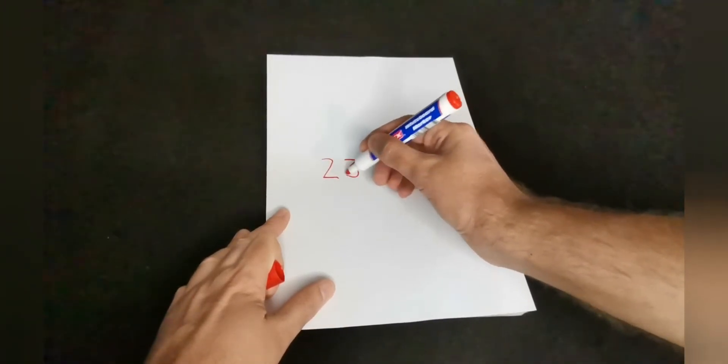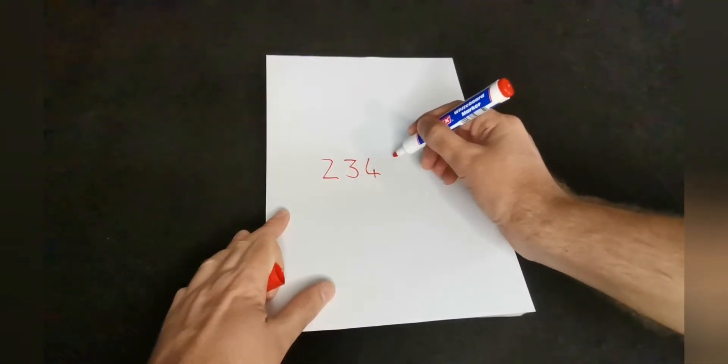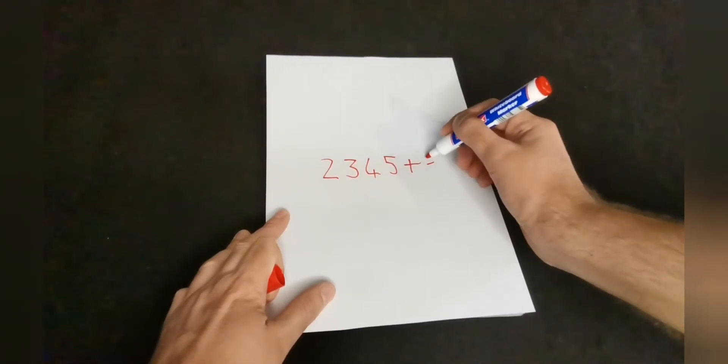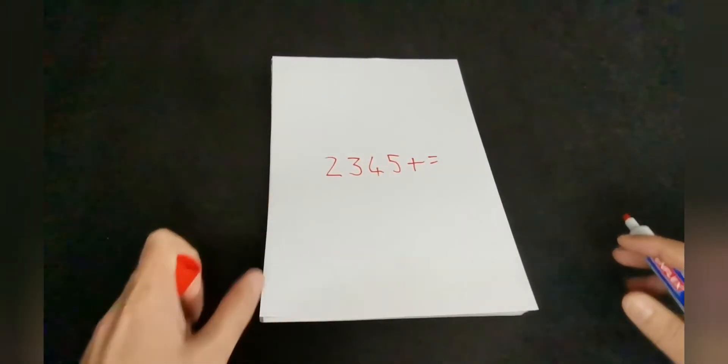So it's two, three, four, five, plus, and equals. Okay, so that's what you need to remember.